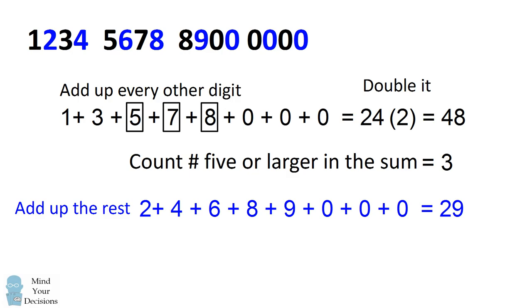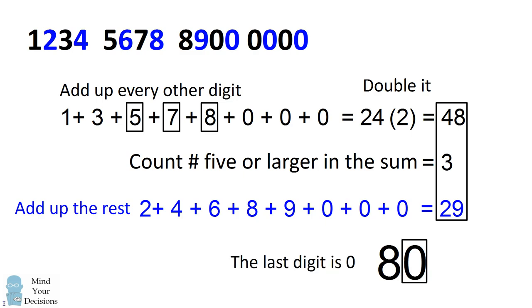Now we're ready to do the magic part. We have 3 numbers: 48, 3, and 29. When we add up these 3 numbers, we're going to end up with the number whose last digit is 0. And this is true for every single credit card number.